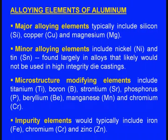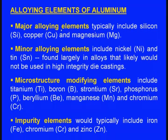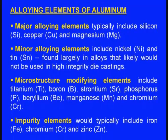When we say alloying elements, there are four types of additives. First one is the major alloying elements, which typically include silicon, copper and magnesium. Next there will be minor alloying elements — nickel and tin — found largely in alloys that would not be high in integrated die casting. Apart from the major and minor alloying elements, there will be microstructure modifying elements.